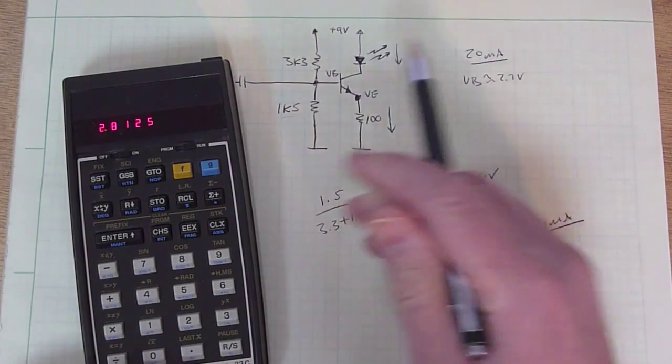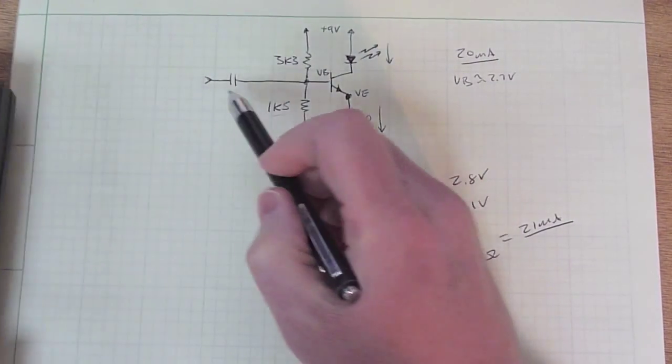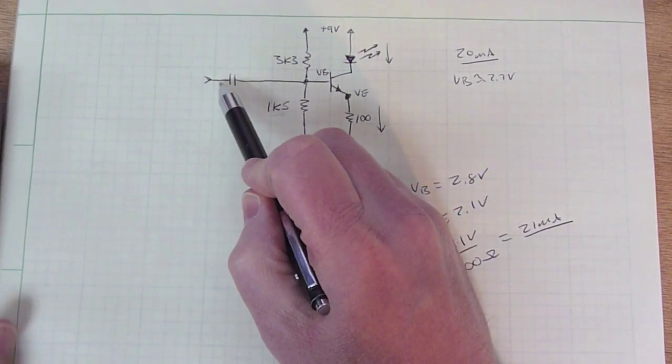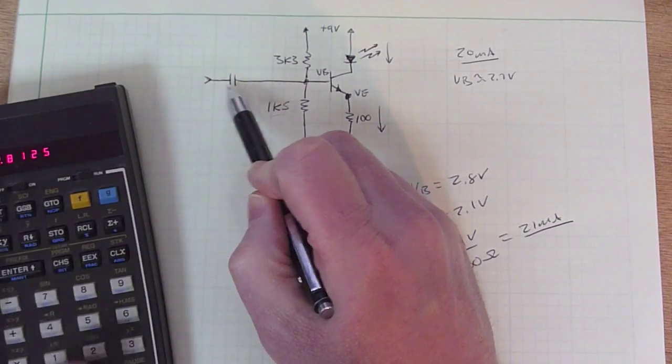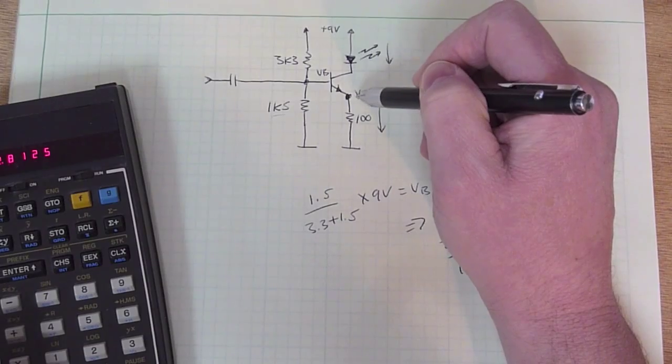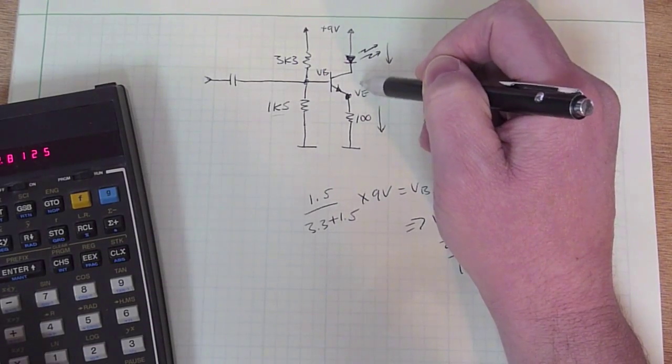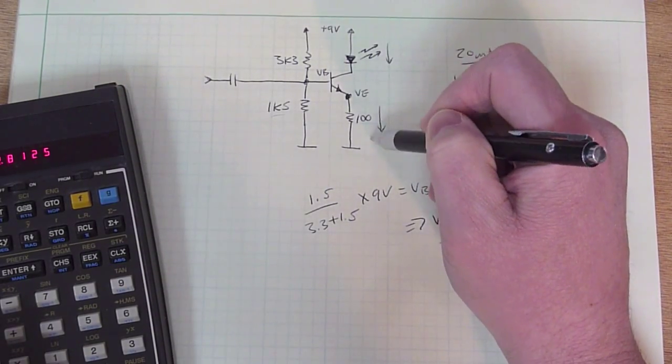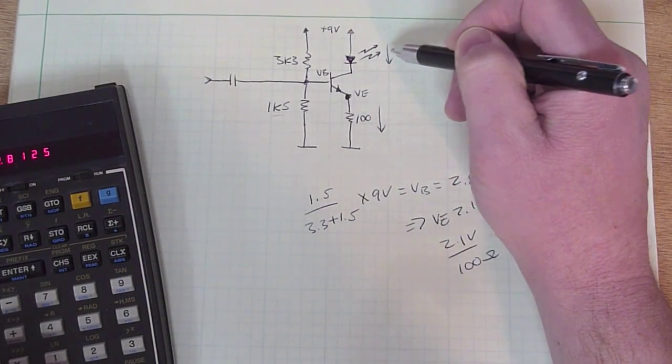Now any input that comes through this capacitor, which only has AC because the DC is blocked, that will jiggle the base voltage up and down, which will jiggle the emitter voltage up and down proportionally, which will jiggle the current through this resistor, which will force the current through the LED to track it.